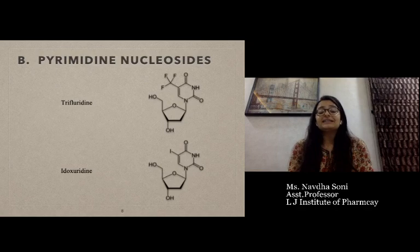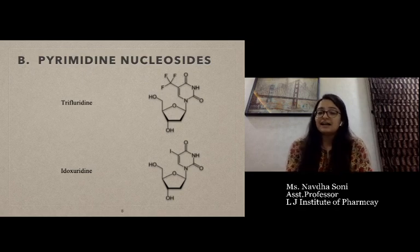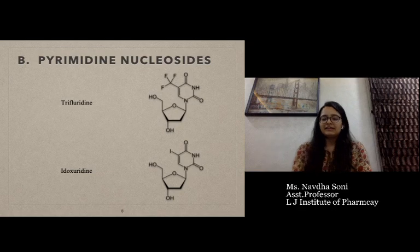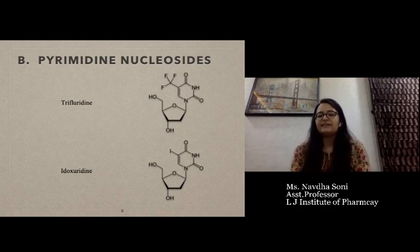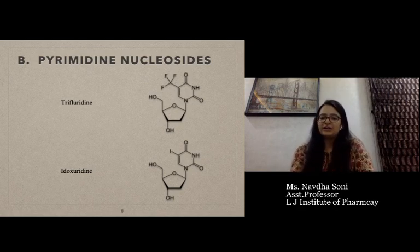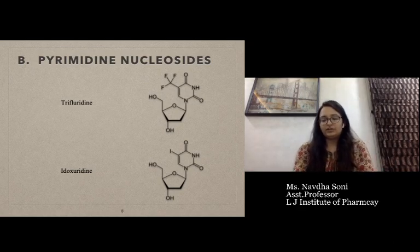The next class is pyrimidine nucleoside and nucleotide. Trifluridine and idoxuridine are examples of pyrimidine nucleoside analogs. The structures of trifluridine and idoxuridine are shown with minor differences — in idoxuridine there is an iodine molecule, while in trifluridine it is a fluorine molecule.